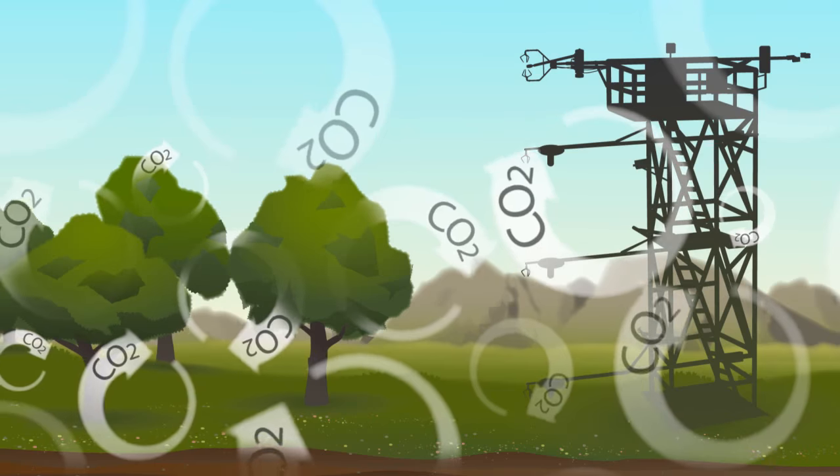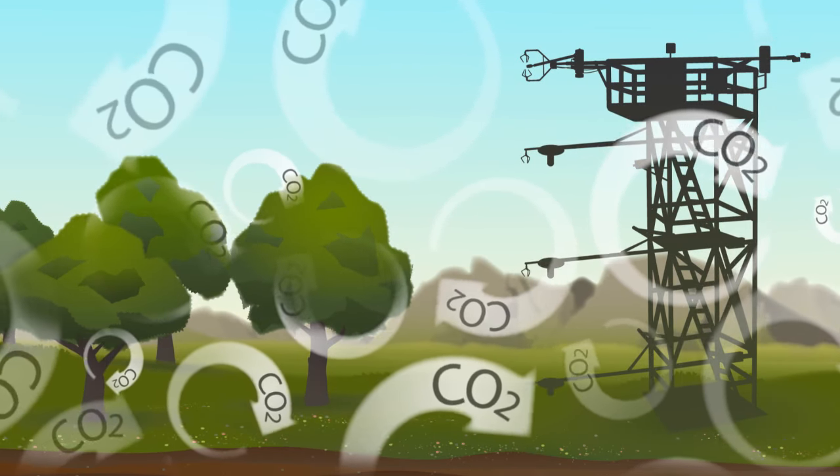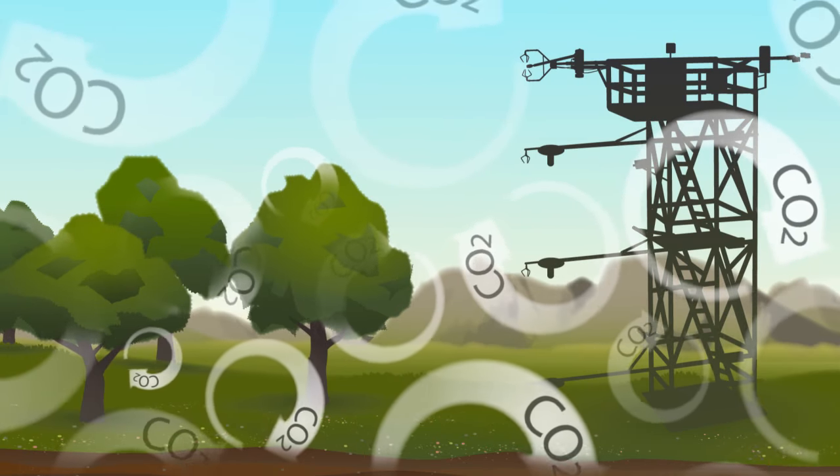Eddy covariance quantifies gas fluxes or changes by directly measuring the movement of gases, like CO2, between an ecosystem and the atmosphere. To simplify it, let's look at both words.